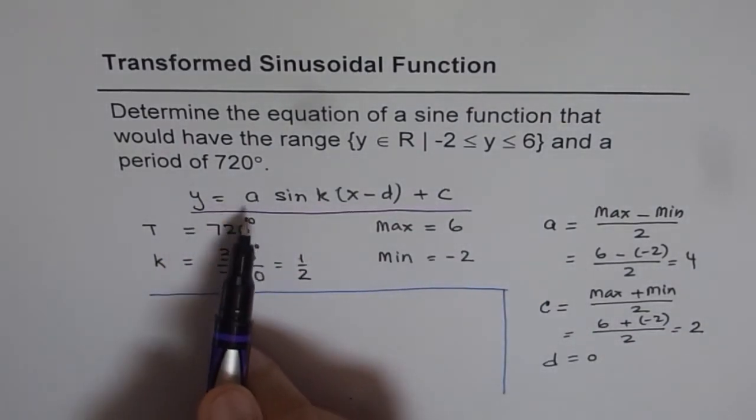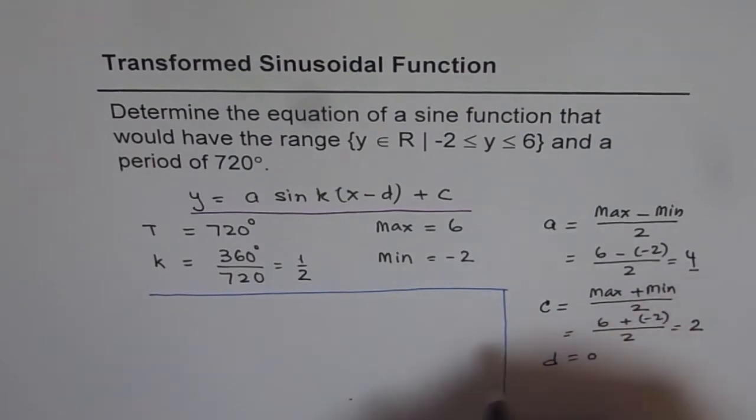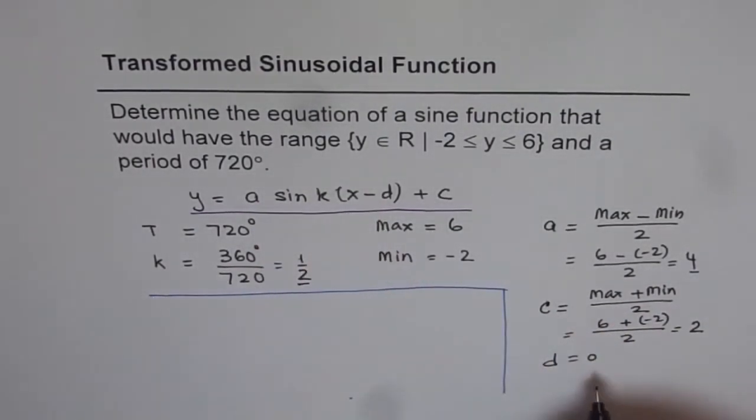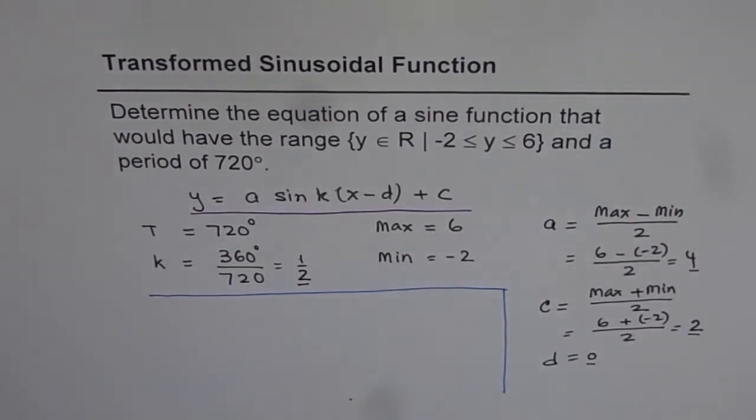As you can see value of a is 4. k is half, d is 0 and c is 2.